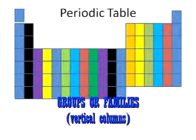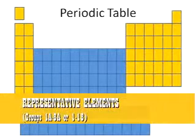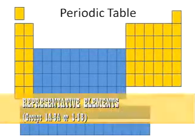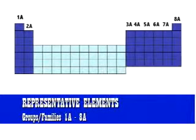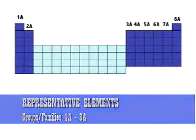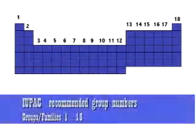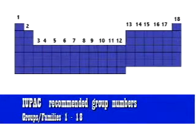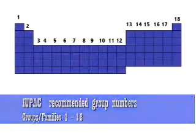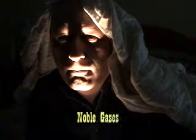The groups or families are vertical columns. Note that one system numbers the representative elements from 1A to 8A — these eight groups represent elements that have from one to eight valence or outer shell electrons. Many newer periodic tables include the transition metals in their numbering system and go from one to eighteen, which the International Union of Chemists recommends.